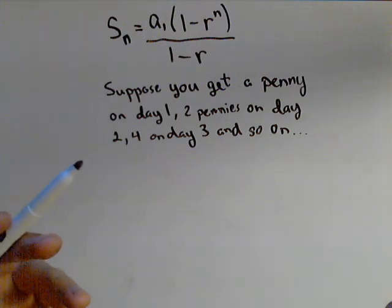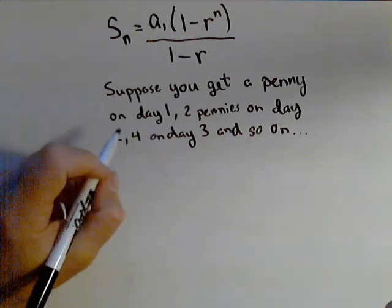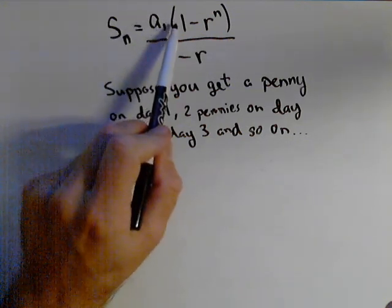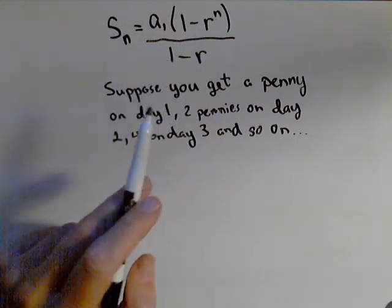What if we want to know how much total we're gonna have after two weeks? What we're doing is we're summing up the first 14 numbers of a geometric sequence. So a sum of a geometric sequence is the first term times one minus the common ratio to the number of terms all over one minus the common ratio.